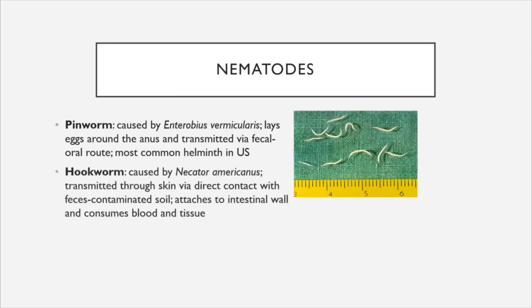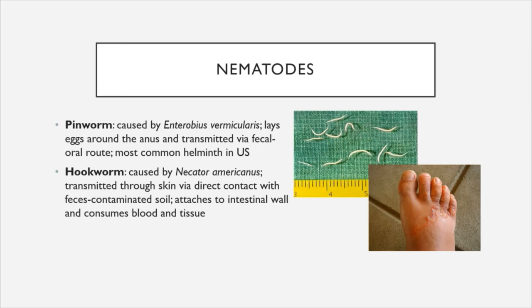Hookworm is caused by Necator americanus and is transmitted through the skin via direct contact, usually with soil contaminated with fecal matter — such as walking barefoot on contaminated soil. In the intestines, it attaches to the intestinal wall using special adapted hooks and then proceeds to consume blood and tissue in its host.